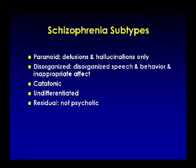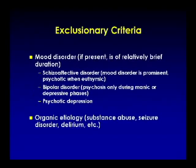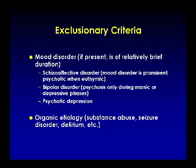Undifferentiated or residual subtypes apply when patients are no longer psychotic. The exclusionary criteria are very important — particularly for board examinations. Think of schizophrenia as a diagnosis of exclusion, particularly excluding organic etiologies, but also other more benign etiologies such as affective psychoses.